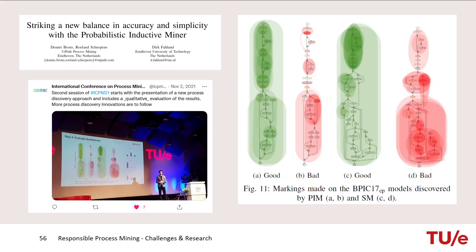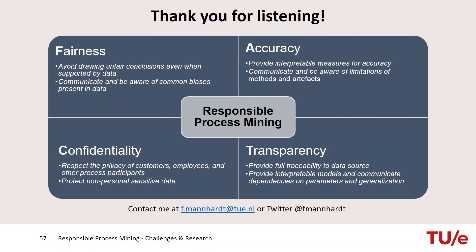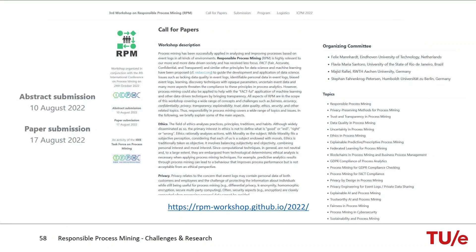Some work in this direction looks not just at numbers but at models qualitatively, asking analysts to judge them. To summarize: four themes — fairness, accuracy, confidentiality, and transparency — all present open challenges in responsible process mining. A workshop on Responsible Process Mining at ICPM welcomes contributions on any of these themes. Thanks for your attention, and sorry for running a few minutes over.